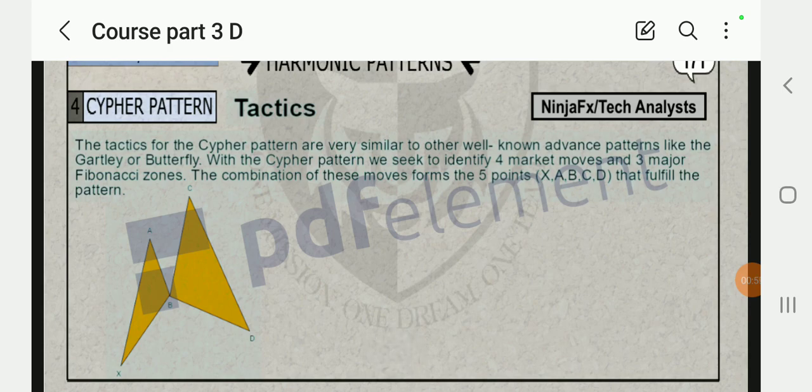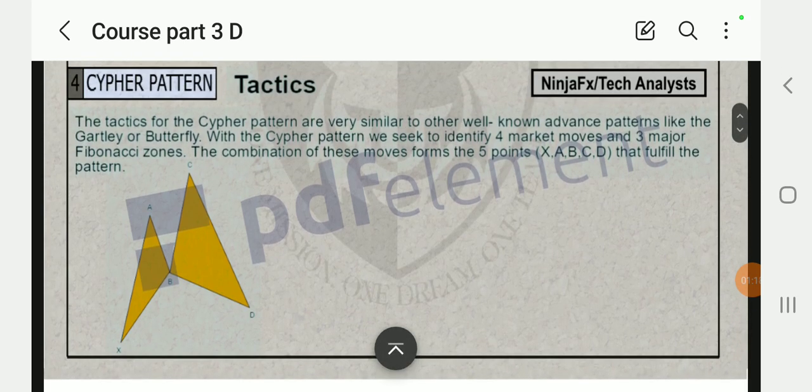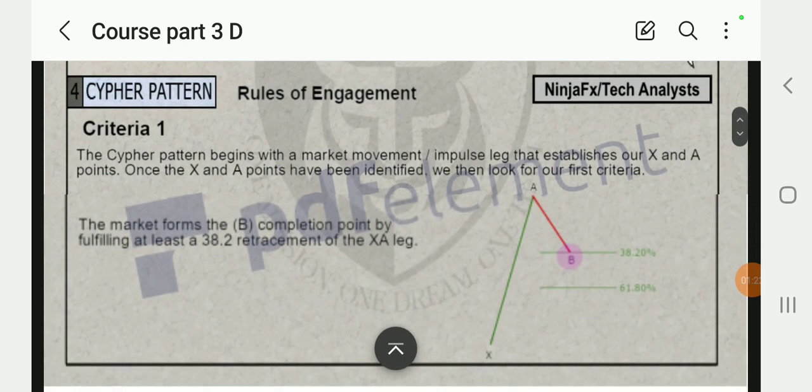The tactics of a Cypher pattern are very similar to other well-known advanced patterns like the Gartley butterfly. With the Cypher pattern we identify four market moves and three major retracement zones. The combination of these moves forms five points: X, A, B, C, D that fulfill the pattern.